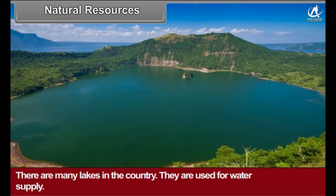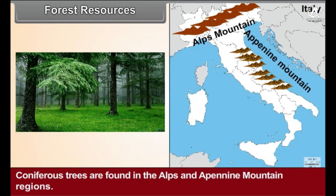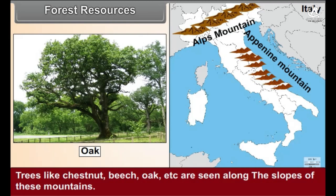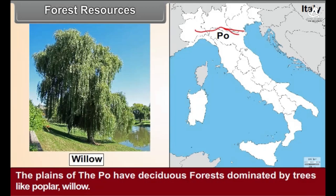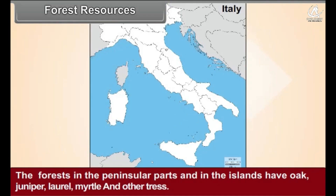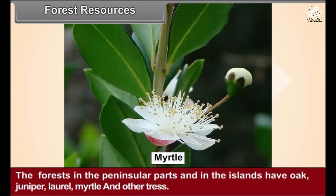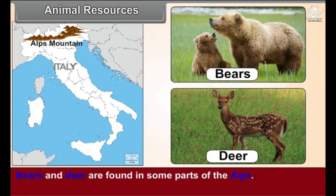There are many lakes in the country, which are used for water supply. Forest Resources: Coniferous trees are found in the Alps and Apennine mountain regions. Trees like chestnut, beech, and oak are seen along the slopes of these mountains. The plains of the Po have deciduous forests dominated by trees like poplar and willow. The forests in the peninsular parts and on the islands have oak, juniper, laurel, myrtle, and other trees.